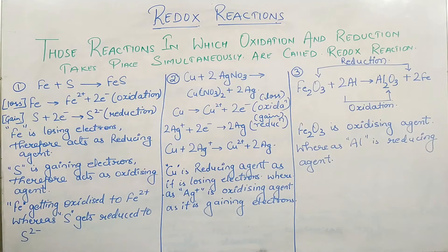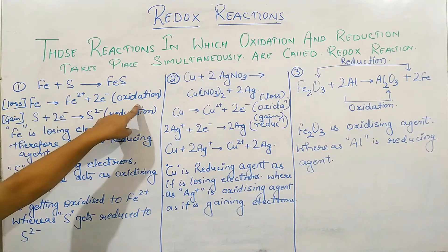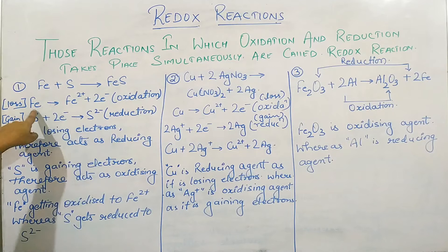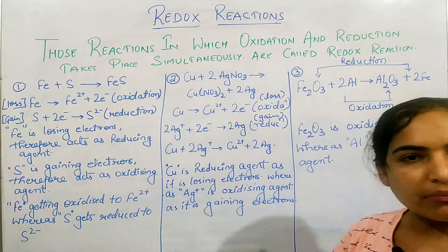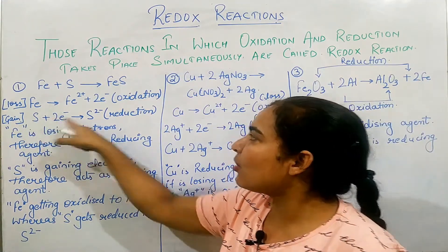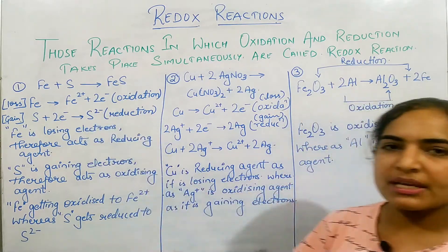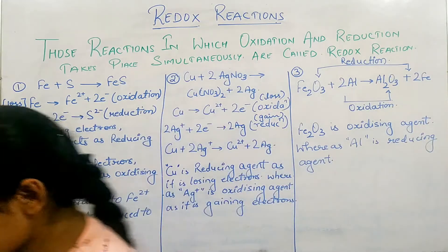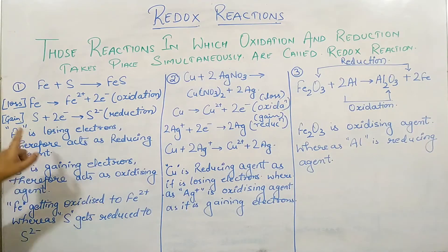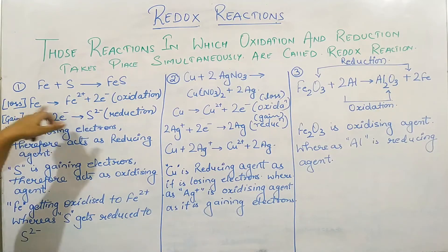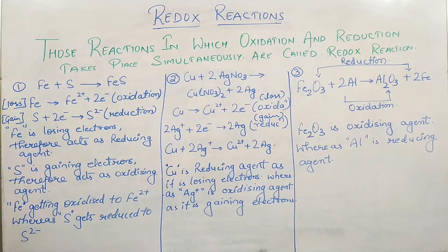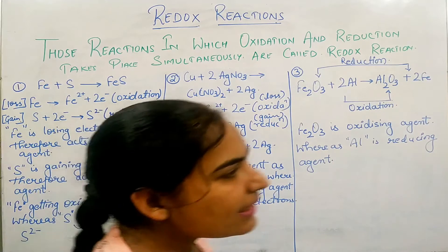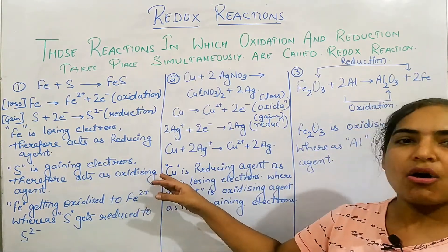In this reaction, ferrous loses electrons, which means oxidation. Sulfur here gains electrons, which means reduction — gain of electron means reduction, loss of electron means oxidation. Ferrous is losing electrons, so it acts as a reducing agent. Sulfur is gaining electrons, so it acts as an oxidizing agent.